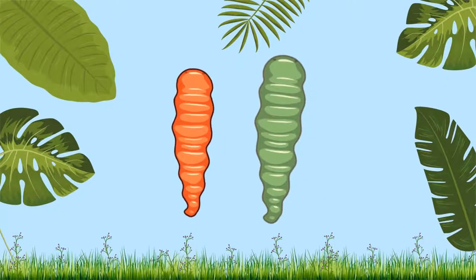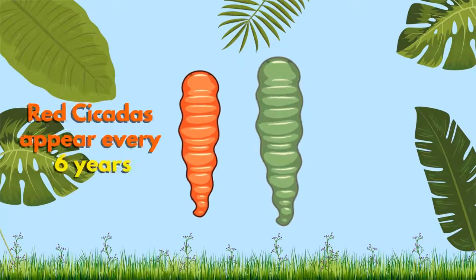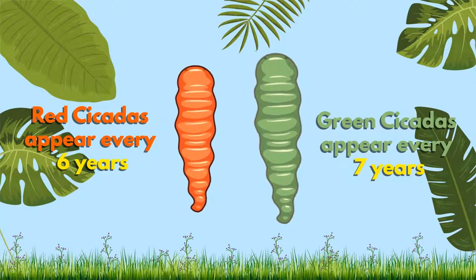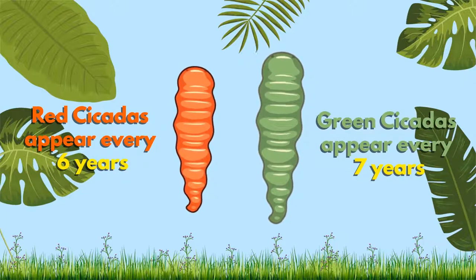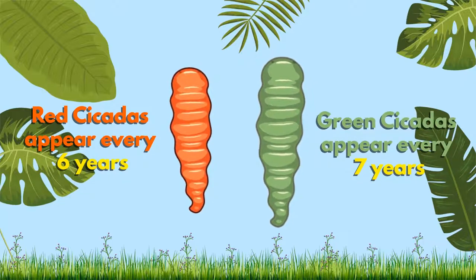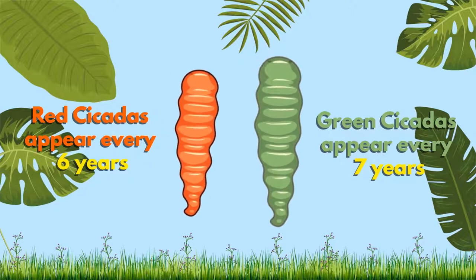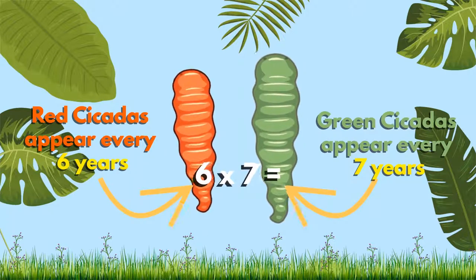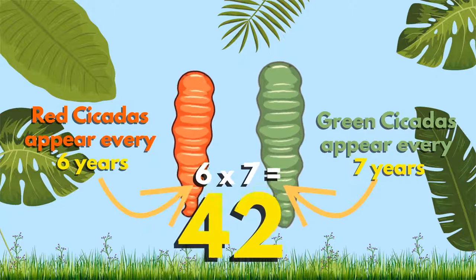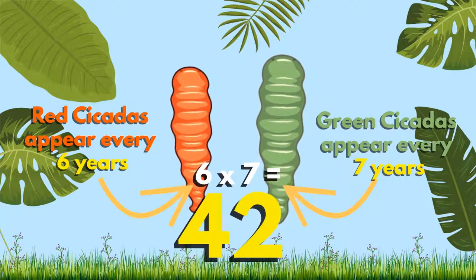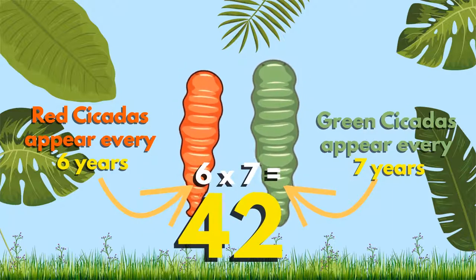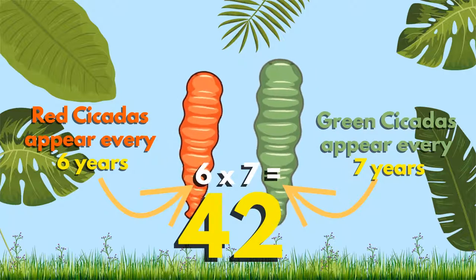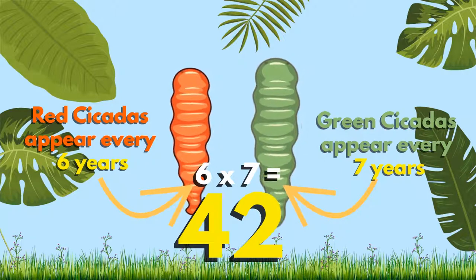Certain species of cicada use the lowest common multiple to survive. If some species appeared at the same time as others, they would interbreed and be vulnerable to predators. The lowest common multiple of 6 and 7 is 42. These species only appear together once every 42 years. Yes, nature uses maths to help them survive.